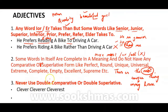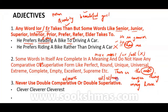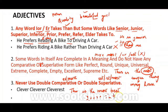Next rule: Never use double comparative or double superlative. Comparative means you either add '-er' or use 'more.' Superlative means you either add '-est'/'-st' or use 'most.' So if someone says 'This is the most best question,' that is wrong because 'best' is already superlative — good, better, best. Similarly, 'He is more cleverer than his brother' is wrong because 'cleverer' is already comparative, so 'more' is not needed.